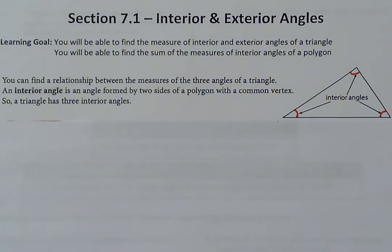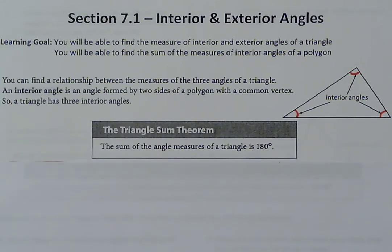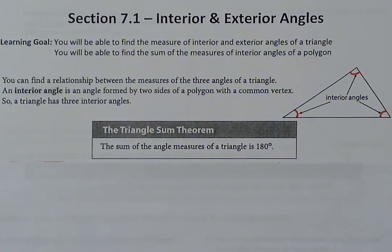We're going to talk about a relationship between the measures of all the interior angles for different shapes. If we talk about a triangle, we have talked about this multiple times, but the sum of all the angles inside a triangle — the sum of all three angles — add up to be 180 degrees. So the sum of the angle measures of a triangle is 180 degrees. We've used that concept in previous sections to find the measure of a missing angle when given two others.